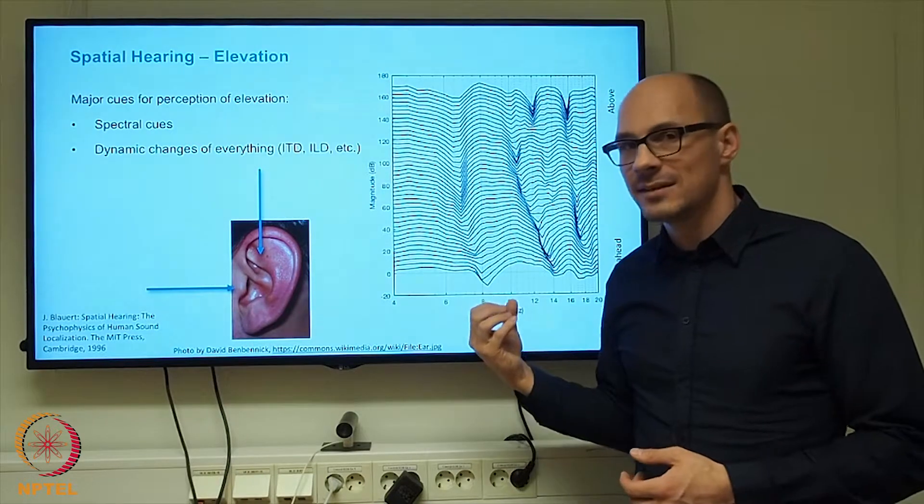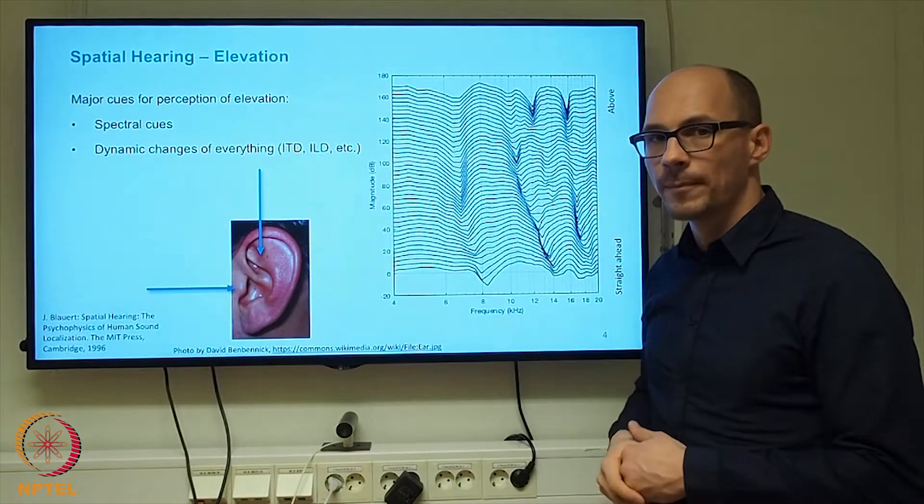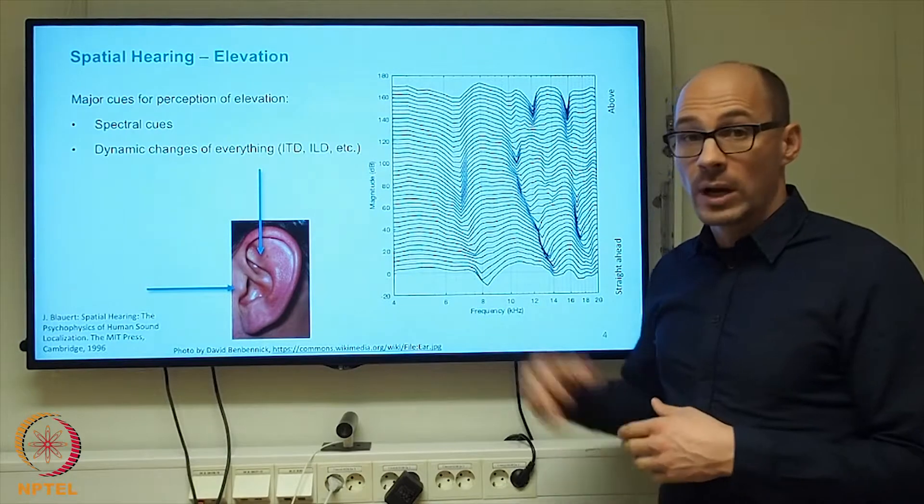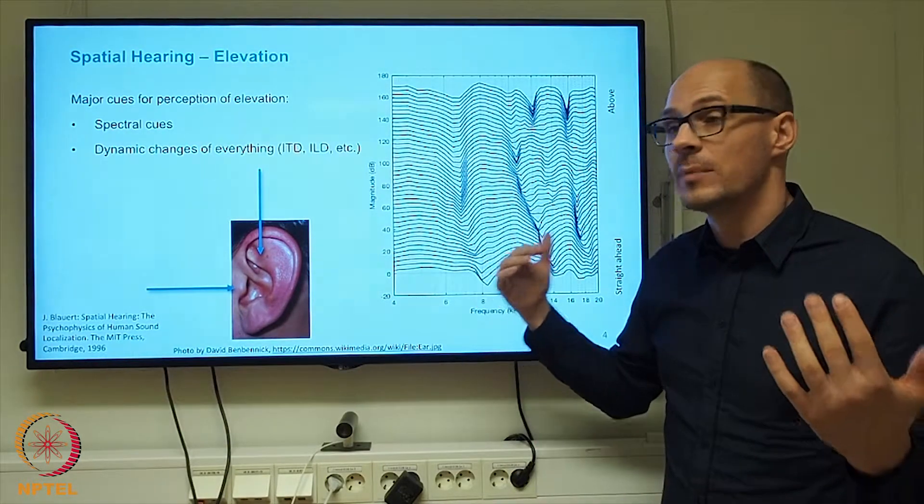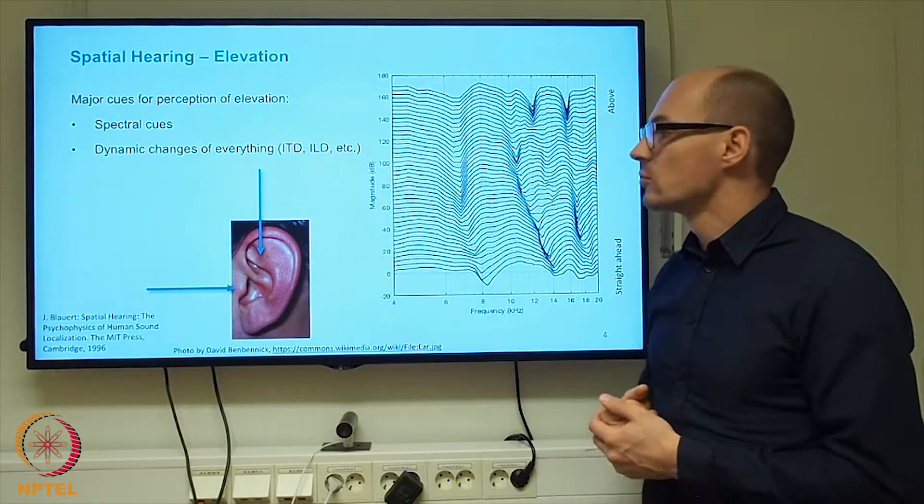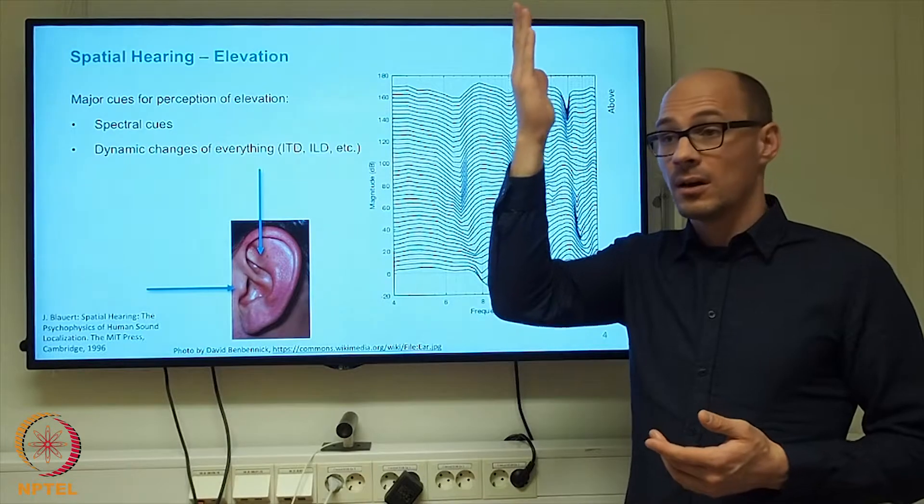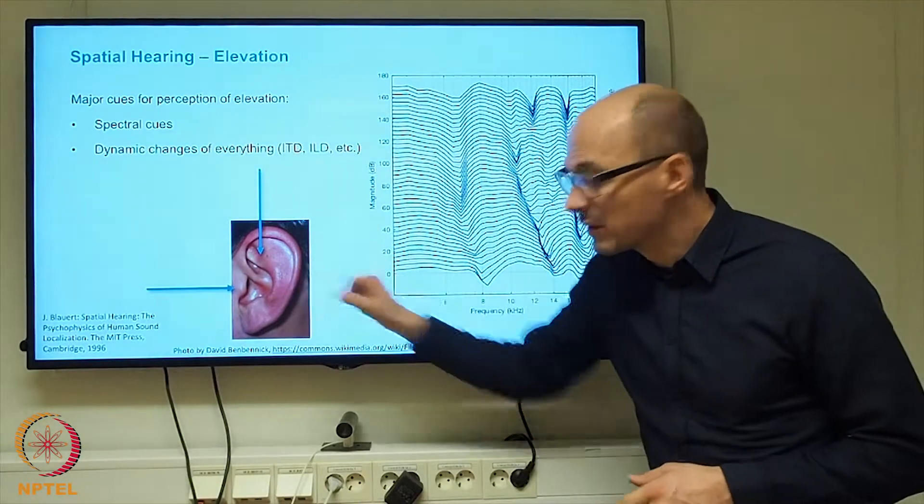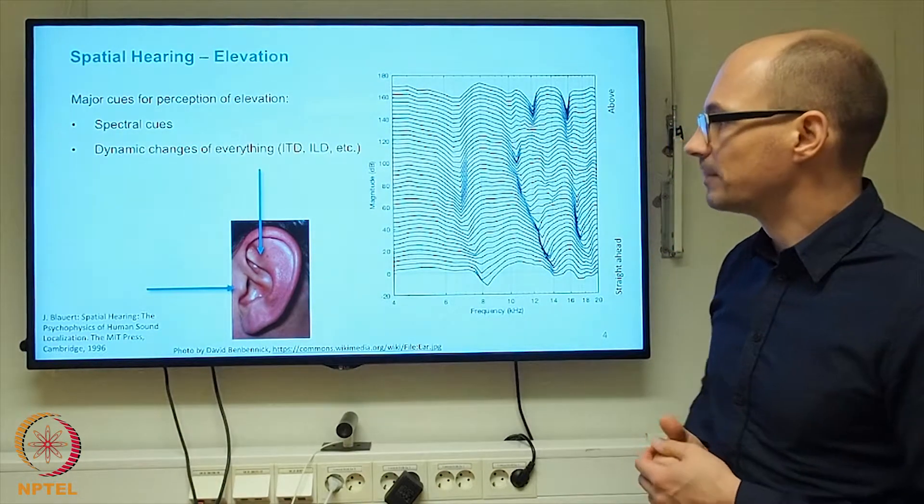There is a lot of systematic differences that occur as a function of the source angle, and our auditory system has learned this. It is aware of what spectral transfer, what transfer path belongs to what sound source location, so that it can recognize if a sound source is elevated. It can recognize all the interferences and all the acoustic influence of the outer ear on the signal that reaches the eardrum.